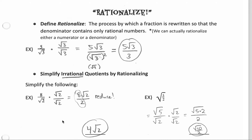A couple more examples for practice: 8 divided by the square root of 2. We're trying to get rid of the square root of 2 in the denominator, so we'll multiply top and bottom by the square root of 2. On top we have 8 times the square root of 2. On the bottom, we're squaring the square root of 2, so we're just left with 2. Notice this time we have a fraction 8 over 2 that can be simplified, so sometimes it is possible to reduce after you rationalize.